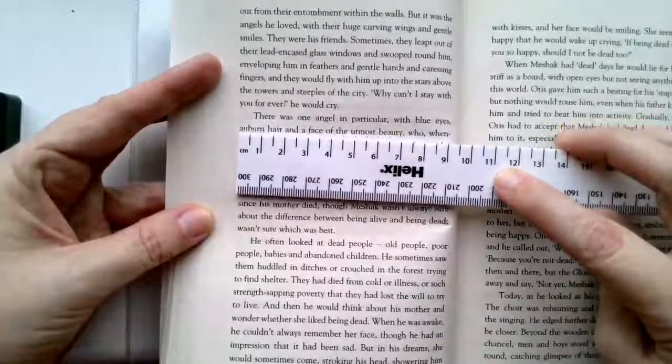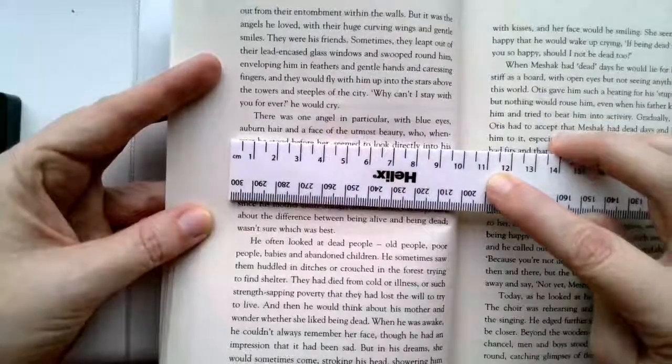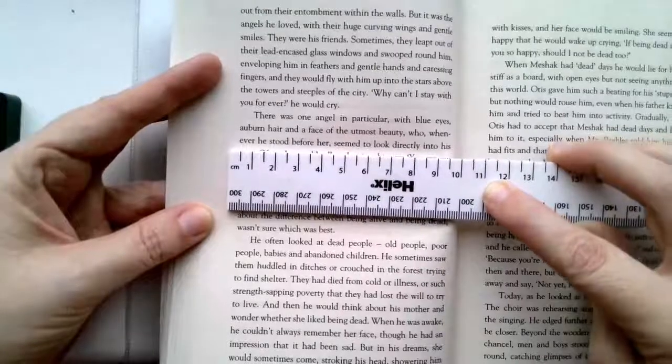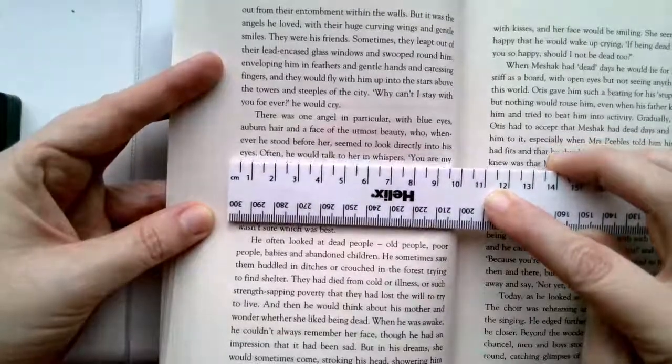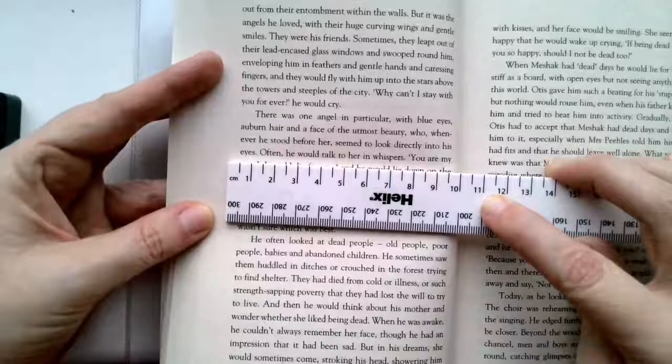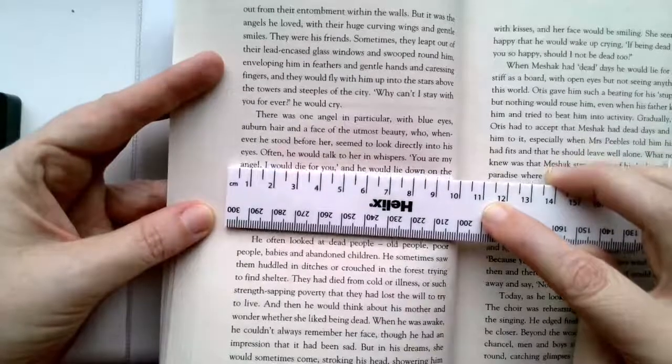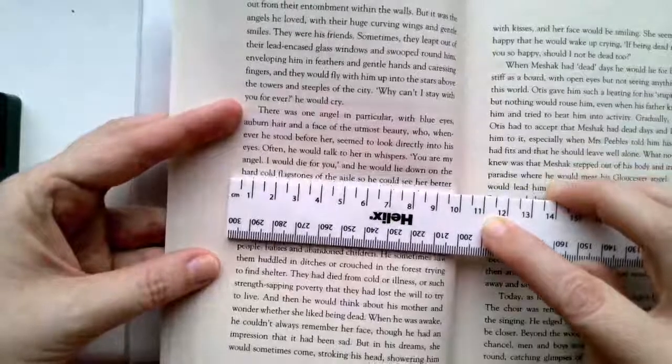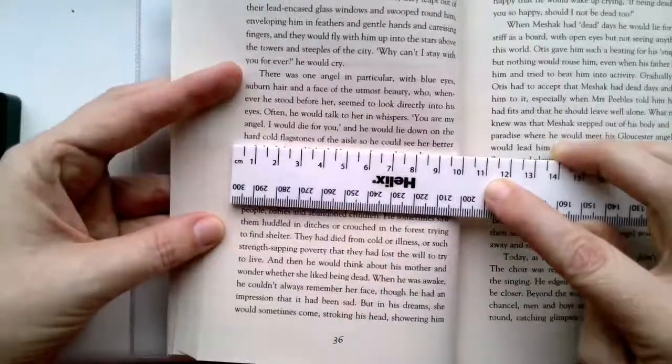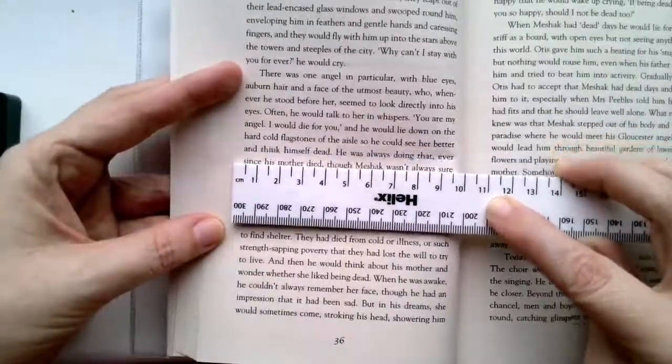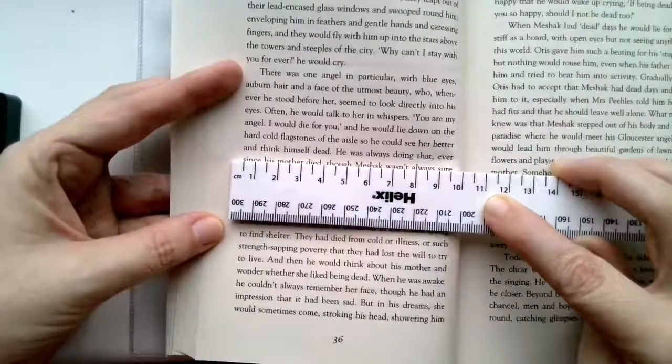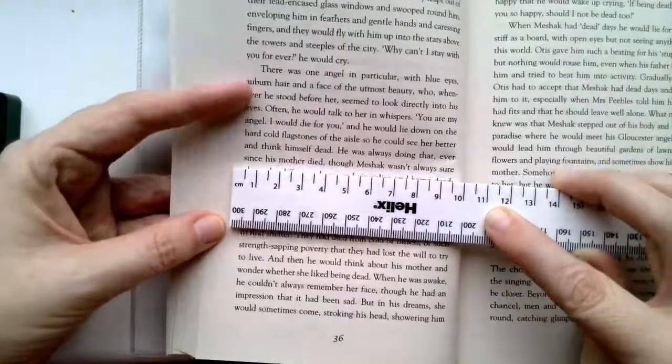There was one angel in particular, with blue eyes, auburn hair and a face of the utmost beauty, who, whenever he stood before her, seemed to look directly into his eyes. Often he would talk to her in whispers. You are my angel. I would die for you. And he would lie down on the hard, cold flagstones of the aisle, so he could see her better and think himself dead. He was always doing that, ever since his mother died.